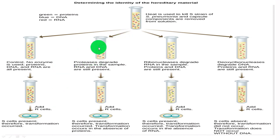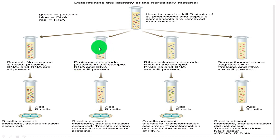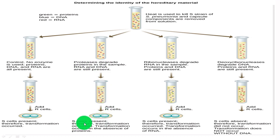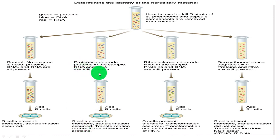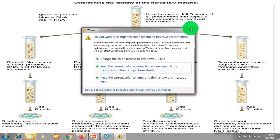Later on, these scientists added protease enzymes to the test tube. The proteases degraded the protein molecules present in the mixture, leaving only RNA and DNA. When R-type cells were added to this test tube, they again observed S-type cells — meaning transformation still took place. Since transformation occurred in the absence of proteins (which were degraded by the protease enzyme), they concluded that RNA or DNA is responsible for transformation.